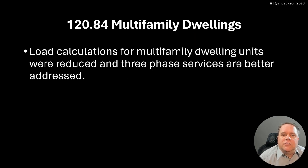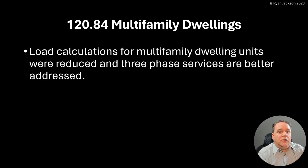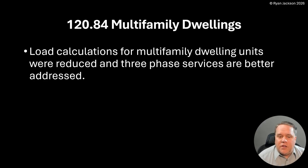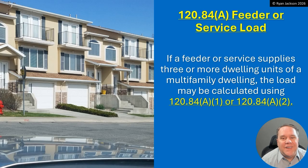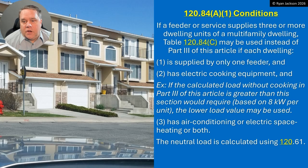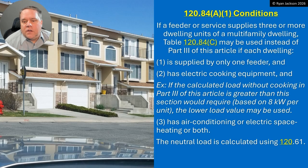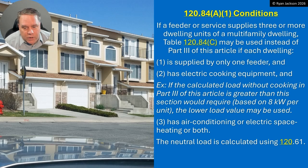Article 120 covers branch circuit, feeder, and service load calculations. Section 120.84 covers multifamily dwellings — load calculations for multifamily dwelling units were reduced because the load calculation went from 3 VA to 2 VA per square foot. But the specific change in 120.84 we're talking about is that three-phase services are now better addressed. If a feeder or service supplies three or more dwelling units, table 120.84(C) can be used instead of Part III if each dwelling is supplied by only one feeder, has electric cooking units, or has air conditioning or electric space heating or both. The neutral load is calculated using 120.61.